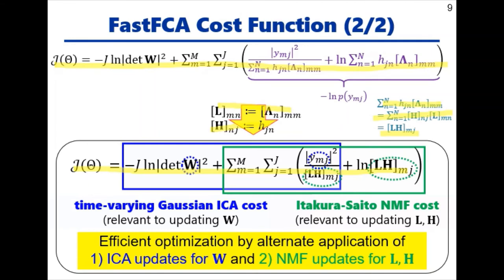Consequently, this cost function can be viewed as a mixture of ICA and NMF costs. Indeed, the blue part can be regarded as a cost of time-varying Gaussian ICA, relevant to updating W. On the other hand, the green part can be regarded as a cost of Itakura-Saito NMF, relevant to updating L and H. Consequently, we can optimize the cost efficiently by alternately applying ICA updates for W and NMF updates for L and H.